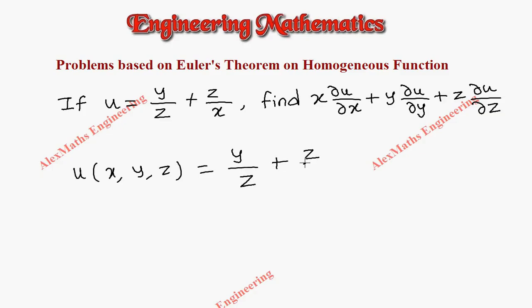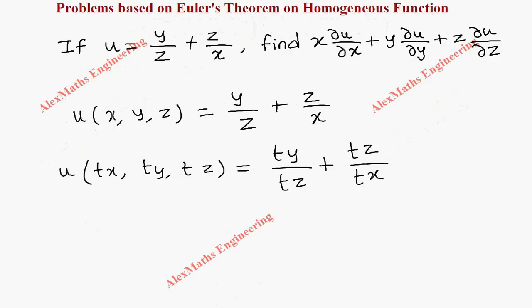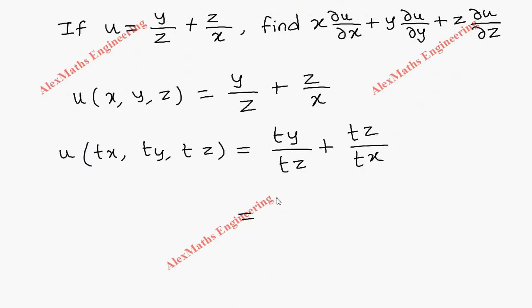Now we will replace x as tx, y as ty, and z as tz. On the other side it will become ty/tz + tz/tx. Then we can take t common from the numerator as well as from the denominator.